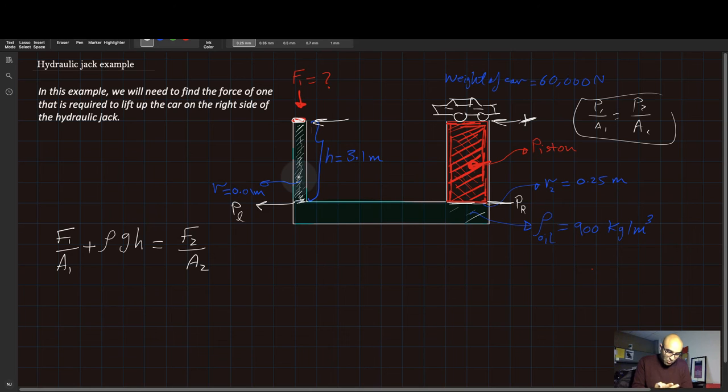Because on the left side you have two pressures: one is coming from F1 over A1 plus rho G H. On the right side you don't have this column of liquid here, but you only have the pressure coming here which is equal to the pressure here.